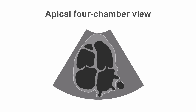Our probe is positioned at the top of the screen. The first structure we're going to image is the LV apex, and then the cavity of the left ventricle. We have the right ventricle here, the right atrium, and the left atrium. This is the mitral valve.